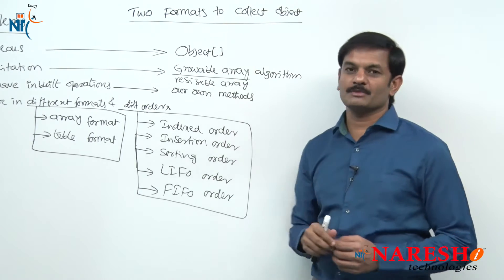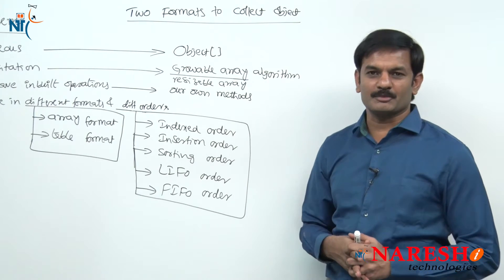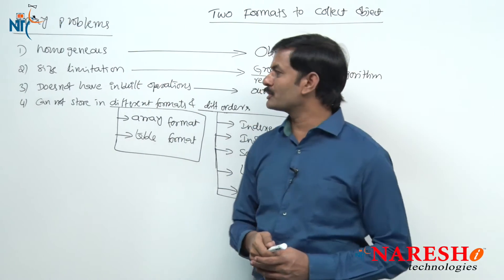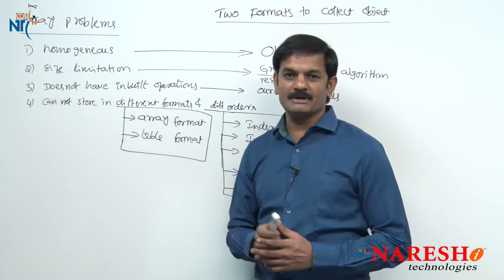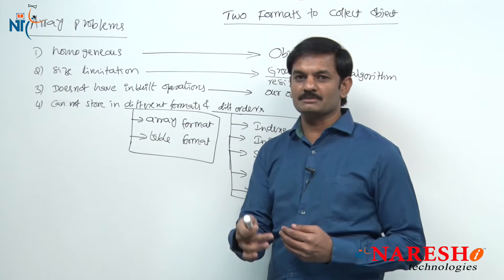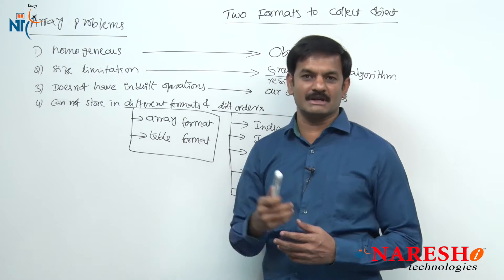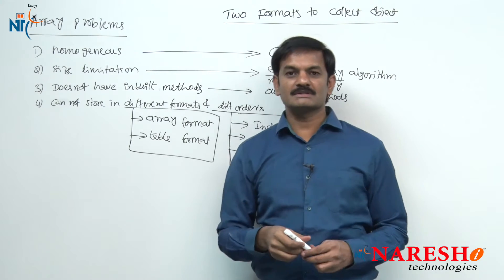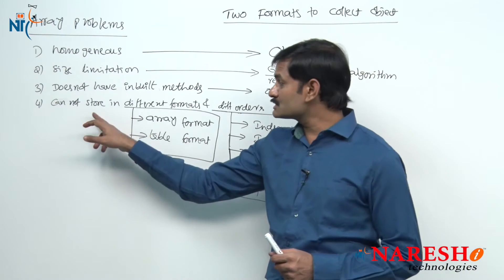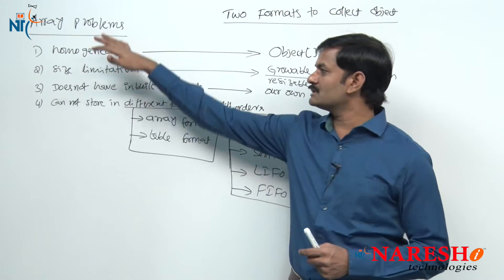Before entering into this topic, let us revise what we discussed in previous sessions about array problems. Array has 4 problems: homogeneous elements only allowed, size limitation, once you store objects you cannot remove and cannot store elements beyond its capacity, and it does not support inbuilt methods or different formats and orders. These are the 4 problems.